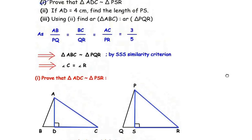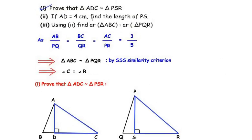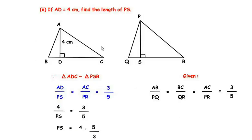Now let us focus on the second sub-question: if AD equals 4 cm, find the length of PS. Since triangle ADC is similar to triangle PSR, the corresponding sides are in the same proportion. So AD over PS equals AC over PR. It was given that AC over PR is in the ratio 3 is to 5, so we write 4 over PS equals 3 over 5.